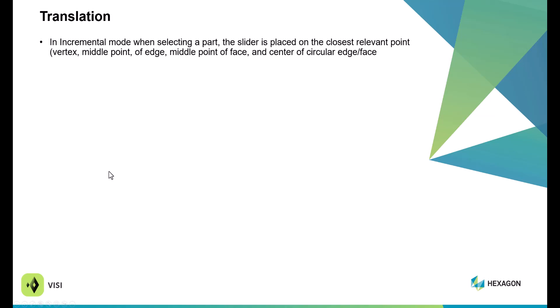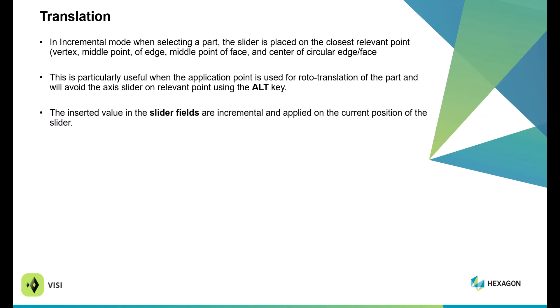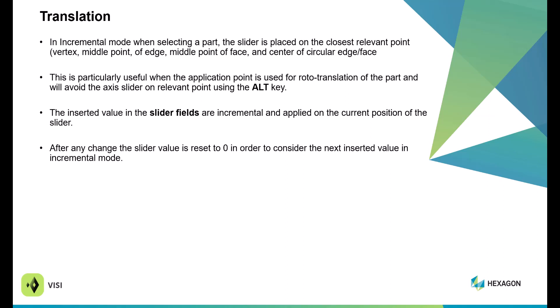There have been several enhancements to the translation command. In incremental translation, when you select a part, the slider is placed on the closest relevant point — for example, the vertex, middle point, edge, middle point of a face, or center of a circle arc. This is particularly useful for rototranslation of a part, avoiding the need to use the slider axis. This also relates to using the Alt key. The inserted value for the slider of the increment is positioned closest to the slider, and after any change, the slider resets to zero to consider the next inserted value. The closest slider axis is aligned to the selected direction.